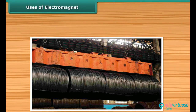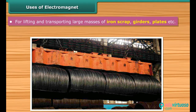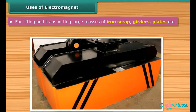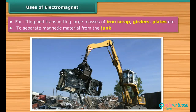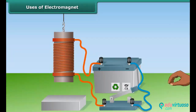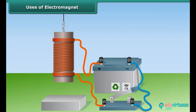You must have observed cranes lifting heavy iron scraps in a scrapyard. These cranes make use of electromagnets for lifting and transporting large masses of iron scrap, girders, plates, etc. It is also used to separate magnetic material from junk. The main advantage of electromagnets over normal magnets is that they can easily start and stop, and the strength of the magnetic field can be effectively controlled.